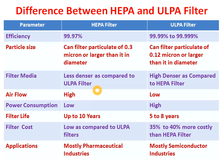This table represents the basic difference between HEPA and ULPA filters. One column represents the parameter, the next is for HEPA filter values, and the other is for ULPA filter values. The first parameter is efficiency: the HEPA filter has an efficiency of 99.97%, whereas ULPA has 99.99% to 99.999%. That means the ULPA filter has higher efficiency compared to the HEPA filter.